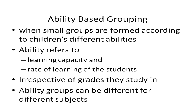Ability-based grouping is another way of forming groups in a multi-grade situation. When small groups are formed according to children's different abilities, it is referred to as ability-based grouping. Ability here refers to the learning capacity and rate of learning of each student, irrespective of the grade they are studying in. Ability groups can differ for different subjects.